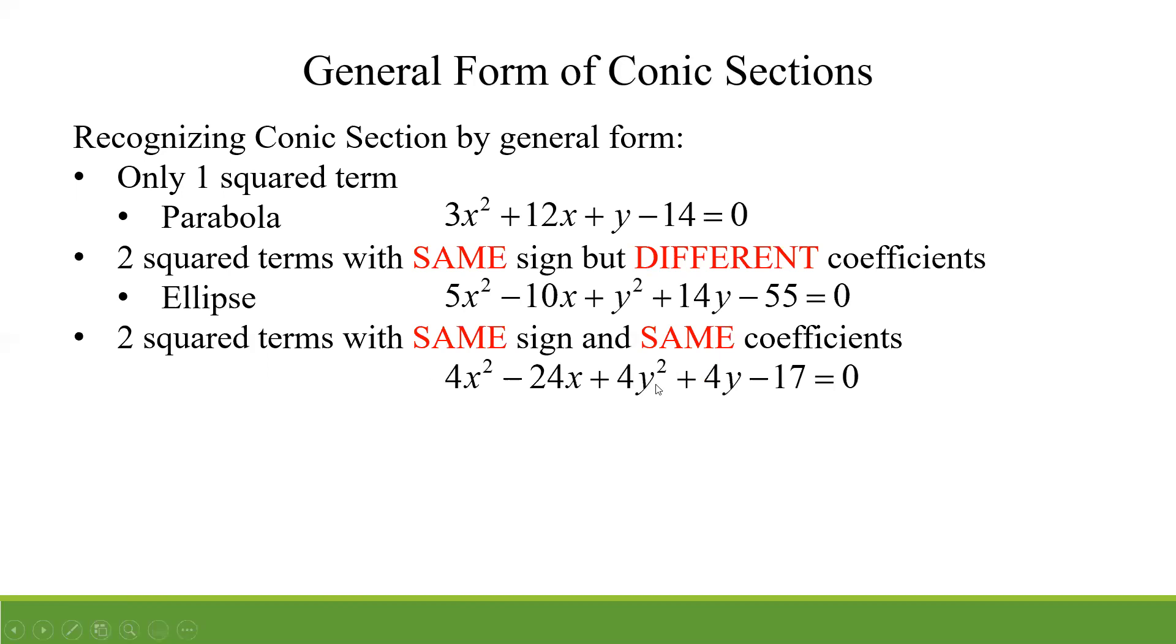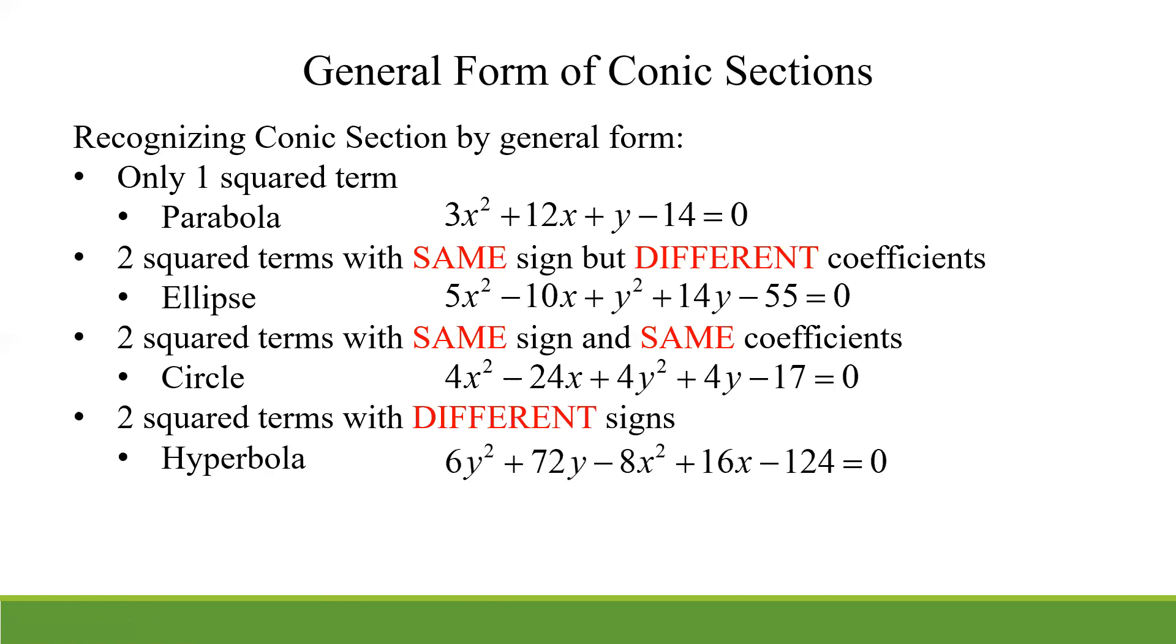If you have two squared terms, both of them with the same sign and the same coefficient. So like a 4x squared and a 4y squared, that's going to be a circle. And then the dead giveaway, if you have two squared terms, it doesn't even matter what the coefficients are, but if one's positive and one's negative, then that's going to be a hyperbola. So right off the bat, if you want to take a screenshot or kind of jot those down, that's kind of a shortcut to know as soon as you see general form, you can automatically know what it is you're going to get.